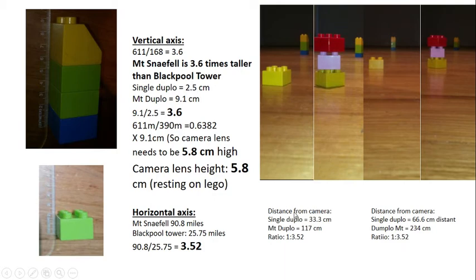For these two sets of photos, I placed the distance from the camera 33 centimeters and distance to this one over here, Mount Duplo is 117 centimeters. So it works out to be a ratio of 3.52 just as it should be.